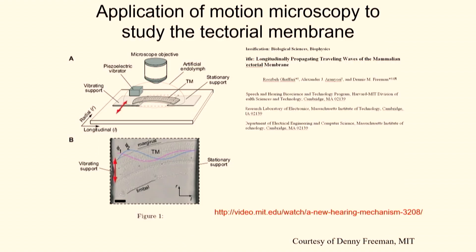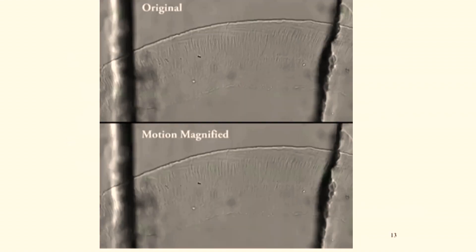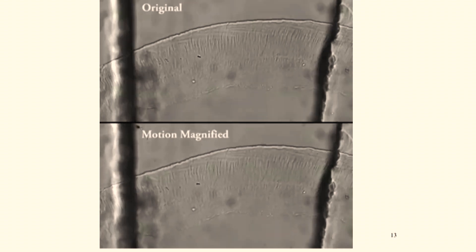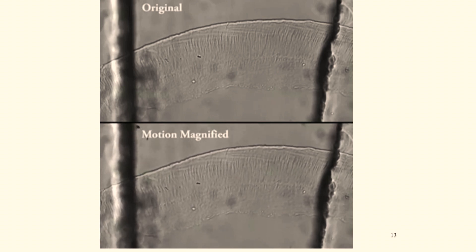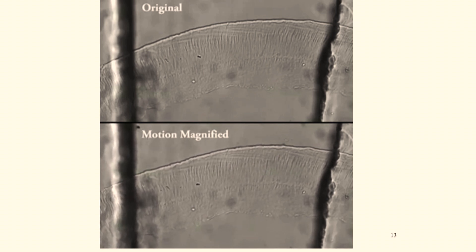You can also take this computational microscope and point it through an actual microscope to amplify small motions in microscope videos. This is joint work with Professor Denny Freeman in this department and his colleagues. They identified another mode for hearing by surface waves across a particular tectoral membrane. The top line shows what they see through the microscope, and the bottom shows that video motion magnified to reveal those surface acoustic waves going across this membrane, which lets them really see what's going on in this new mode for hearing.